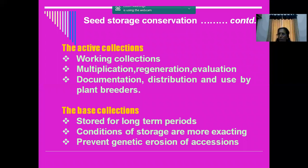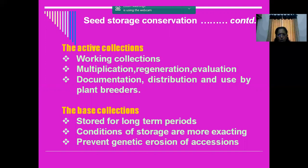In seed storage conservation, we have basically active collection and base collection. Active collection means the materials we are frequently using - those seeds are called active collection. Base collection means seeds which are not at all disturbed and are kept in the gene bank undisturbed - that is called base collection. The active collection is the working collection taken for multiplication, regeneration, and supply. The base collection is stored for long-term periods under optimum storage conditions, which prevents genetic erosion of those accessions.